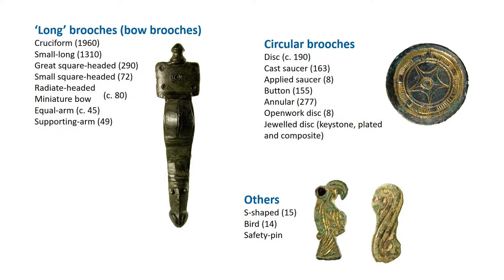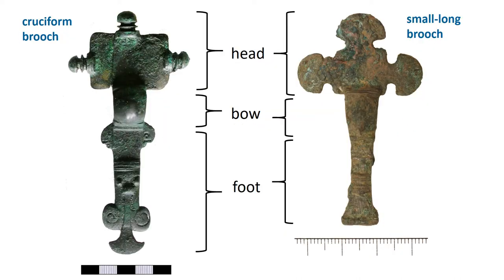We're now going to look at the commonest types of early Anglo-Saxon brooches. We'll divide them into two major groups: the long brooches, also known as bow brooches, and the circular brooches, with a brief look at other shapes at the end. The vast majority of all early Anglo-Saxon brooches can be divided into these two groups; the other shapes are quite rare. Because early Anglo-Saxon brooches are very regionalised, what you see most of will depend on where you are in the country.